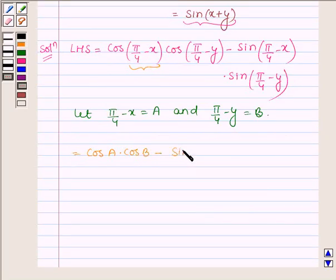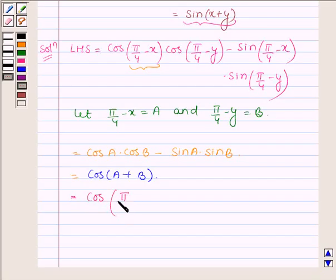Then the LHS becomes cos(A)cos(B) - sin(A)sin(B). And cos(A)cos(B) - sin(A)sin(B) is cos(A + B).